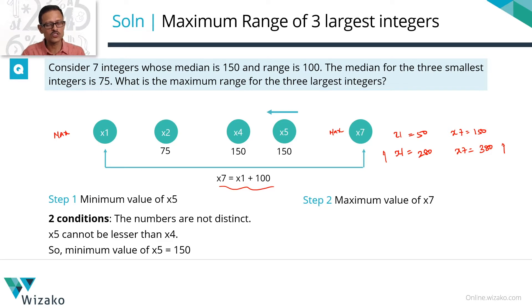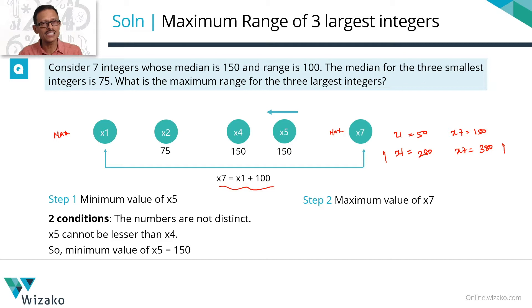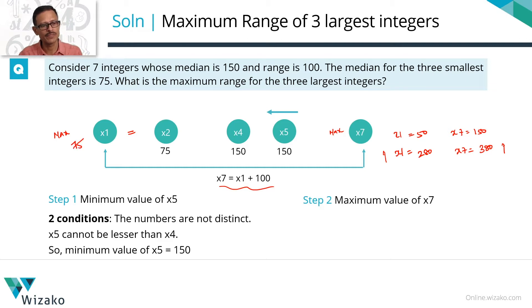Since the numbers are in ascending order, x1 cannot be greater than x2. So x1 is less than or equal to x2. The maximum possible value for x1 is when x1 equals x2, which equals 75. Therefore, the maximum possible value for x7 is 100 more than that — which is 175.